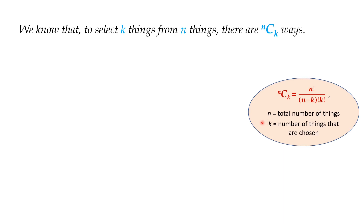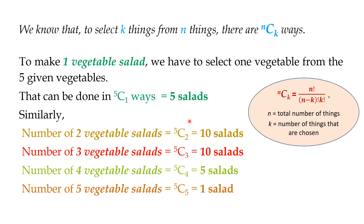nCk equals n factorial divided by (n minus k) factorial into k factorial. Here n equals the total number of things and k equals the number of things chosen. To make a 1-vegetable salad, we have to select 1 vegetable from the 5 given vegetables. This can be done in 5C1 ways. Therefore, the number of 1-vegetable salads equals 5C1, i.e. 5.